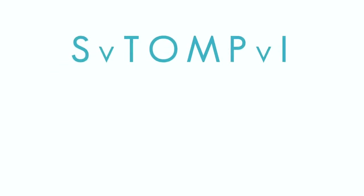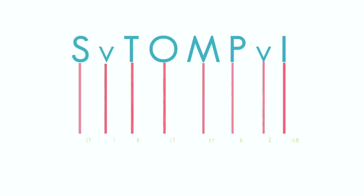Stompy stands for Parts of Speech and Types of Words. Here is the acronym STOMPY in its complete form. As you can see, there are verbs after the subject and after the place which are not pronounced. Let me take you through Stompy and explain each letter. You must understand that each letter represents a word in a sentence.